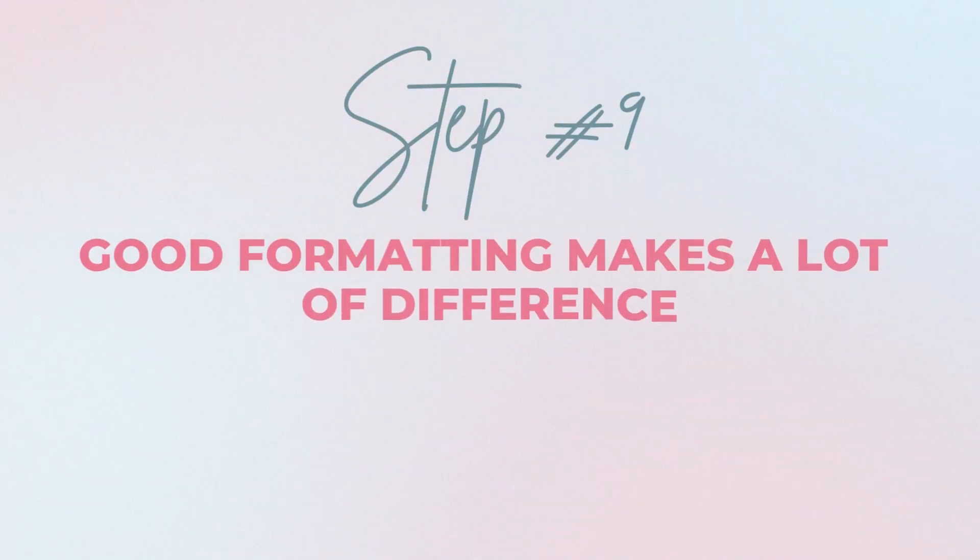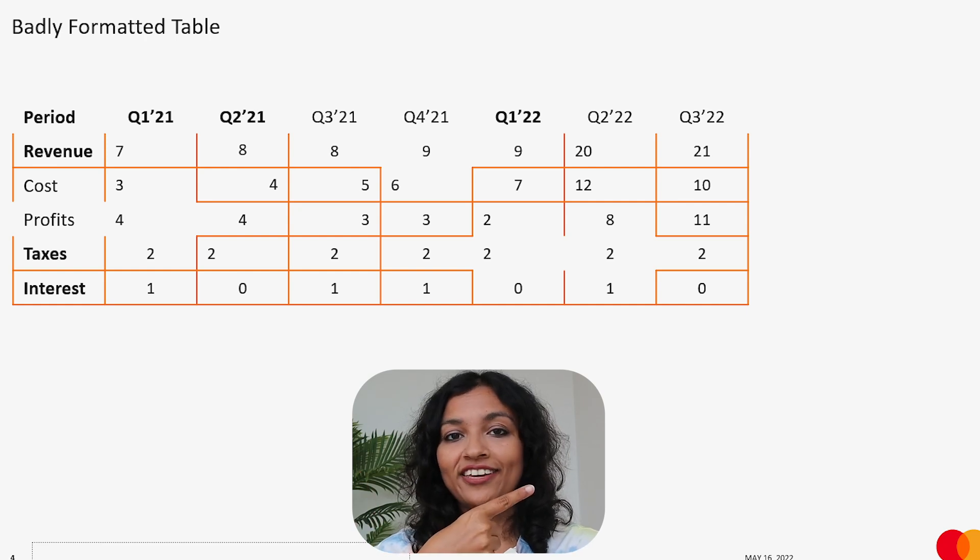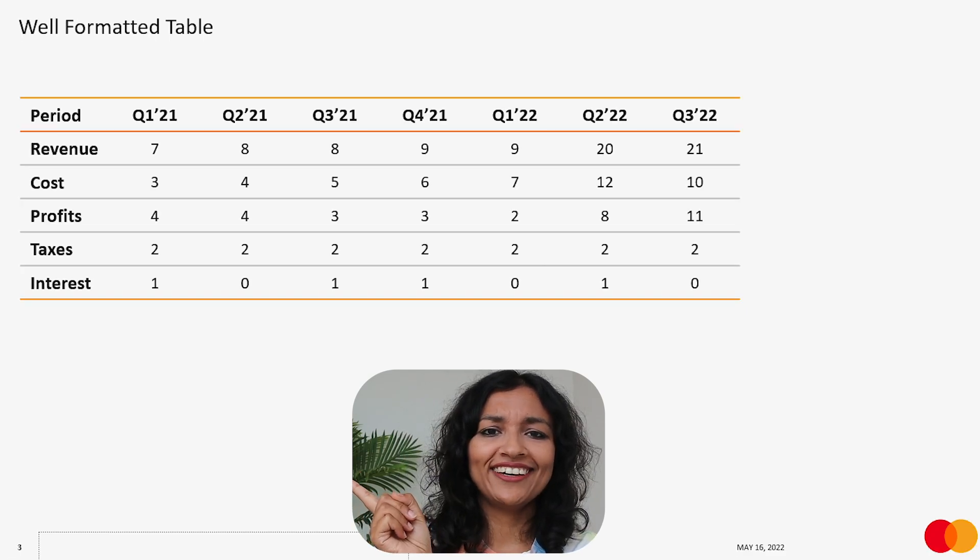Number nine: good formatting makes a lot of difference. For table formatting, let me put one example here and one here — you can see which one looks better. Similarly for text boxes, when you put text boxes in a PPT, make sure they are aligned, that similar messages are in text boxes of the same size, the sizes are not varying, the boxes are not floating around everywhere, and everything is aligned — either top, right, left, or bottom — and everything is very consistent and coherent.